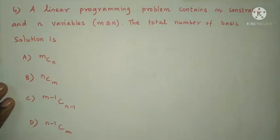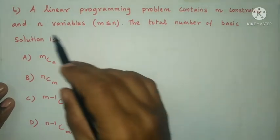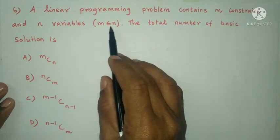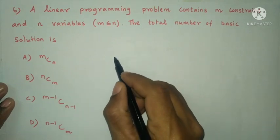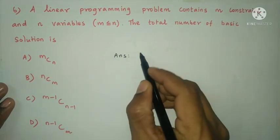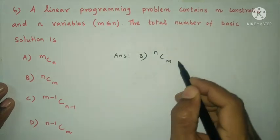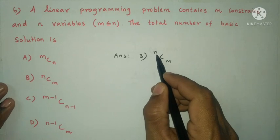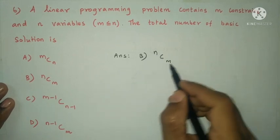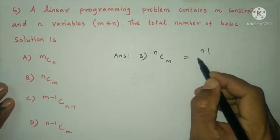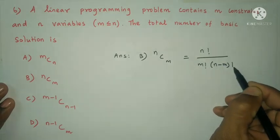Next question: A linear programming problem contains M constraints and N variables, where M is less than or equal to N. The total number of basic solutions is N-choose-M, that is N factorial divided by M factorial into (N minus M) factorial. The answer is option B.